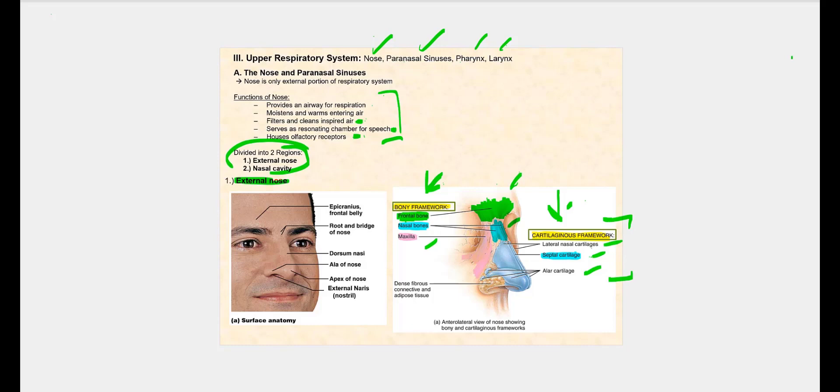Looking at the image on the left, I want to point out what's called the external nares, also referred to as the anterior nares — basically, our nostril. This is where air flows in when we breathe in, and air flows out when we breathe out. It is commonly called our nostrils.